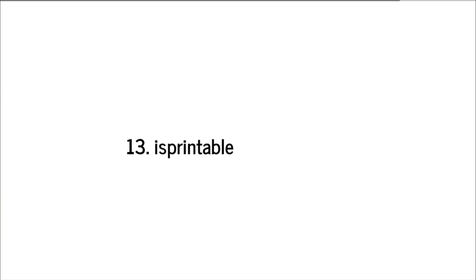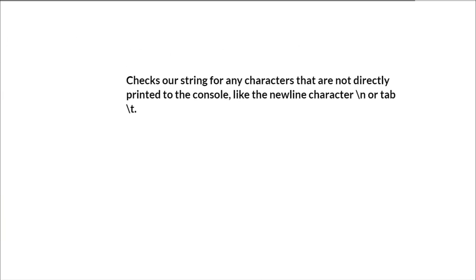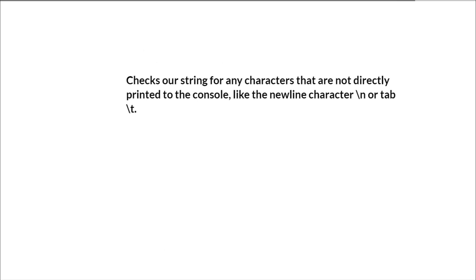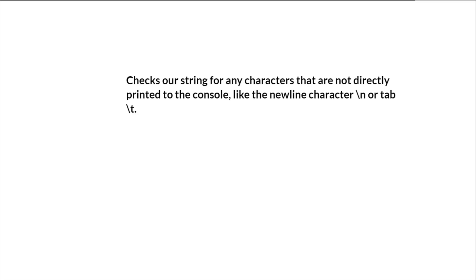The next is isprintable. It checks our string for any characters that are not directly printed to the console, like the newline character or tab character. So this string is printable, whereas this one is not because it contains a backslash-n. If we just print it out, we can see the output of 'line1' and 'line2'.